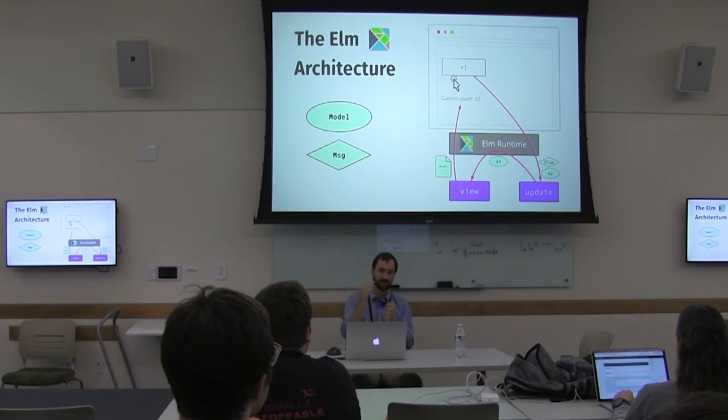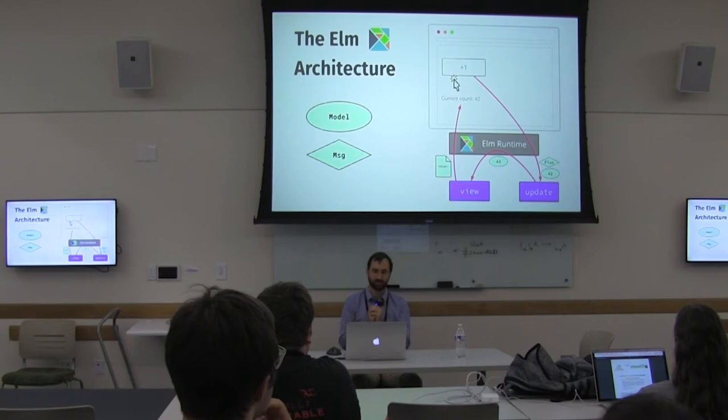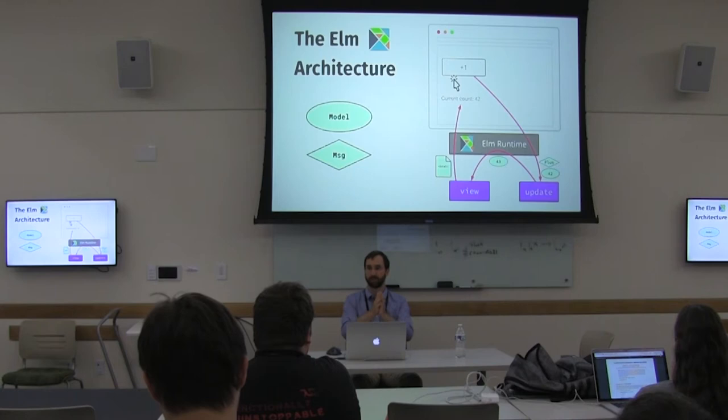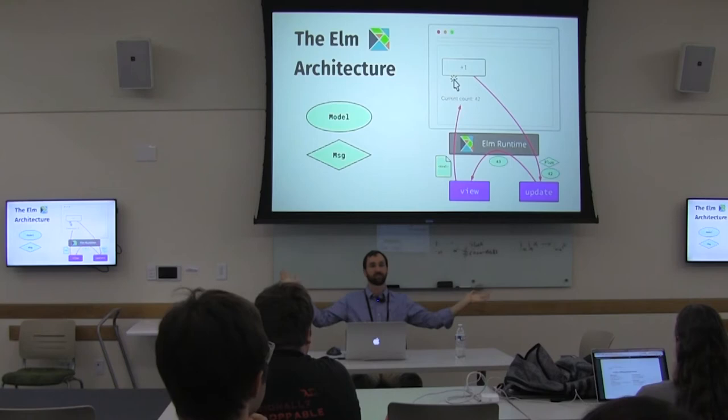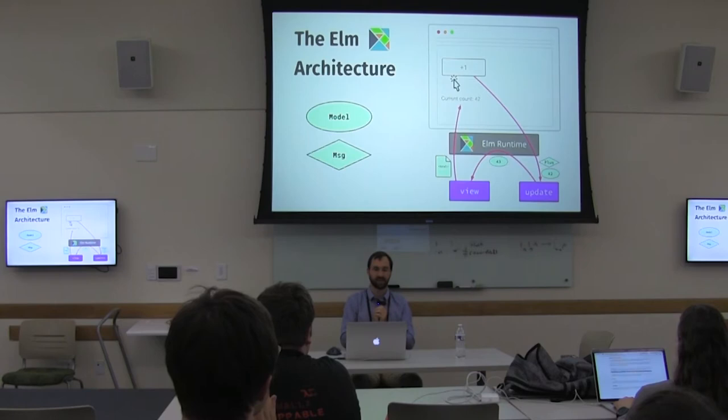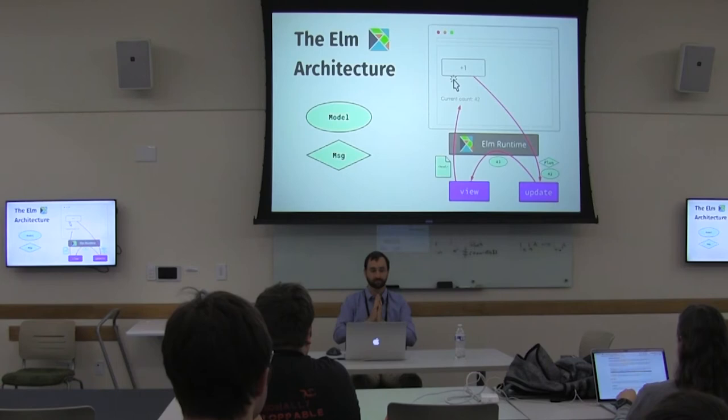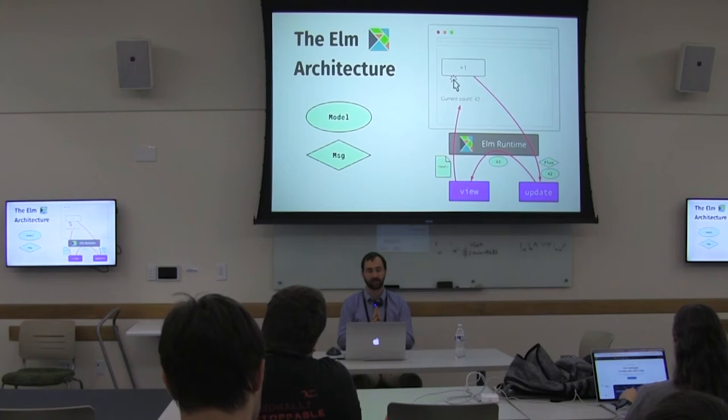That new model gets passed through to the Elm runtime to keep track of current application state, then through to the view function. The view function is a pure function where the input is the current application state and the output is the HTML for our entire application. The Elm runtime does its virtual DOM diffing magic to figure out which pieces to change in the DOM, and we get an incremented counter to 43.